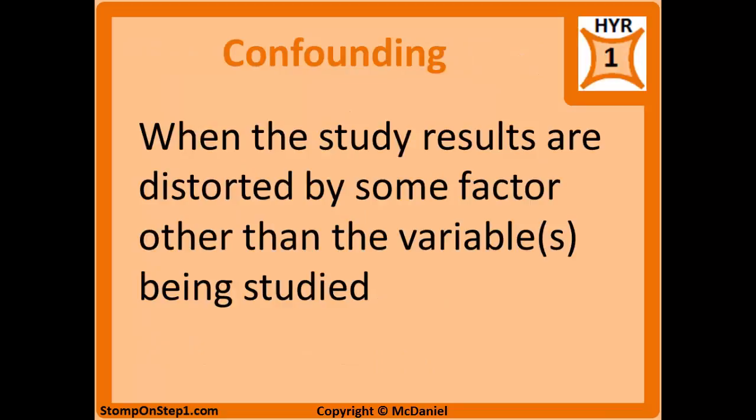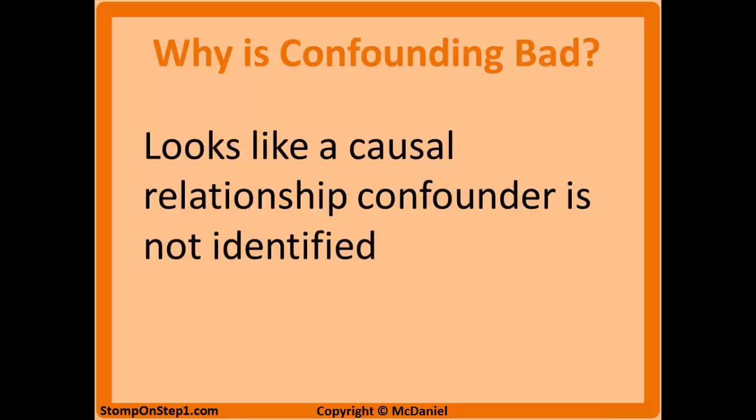Confounding is when the study results are distorted by some factor other than the variable being studied. It appears that there's a relationship between the exposure and the health outcome based on the results, but there really isn't — some other factor is causing the results to look this way. An unwise researcher may incorrectly conclude there's a causal relationship when there really isn't, so you need to identify and correct for confounders or eliminate them altogether.